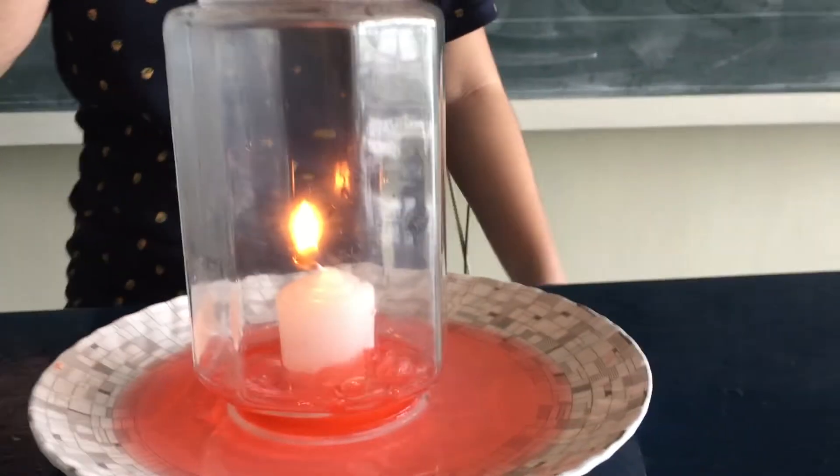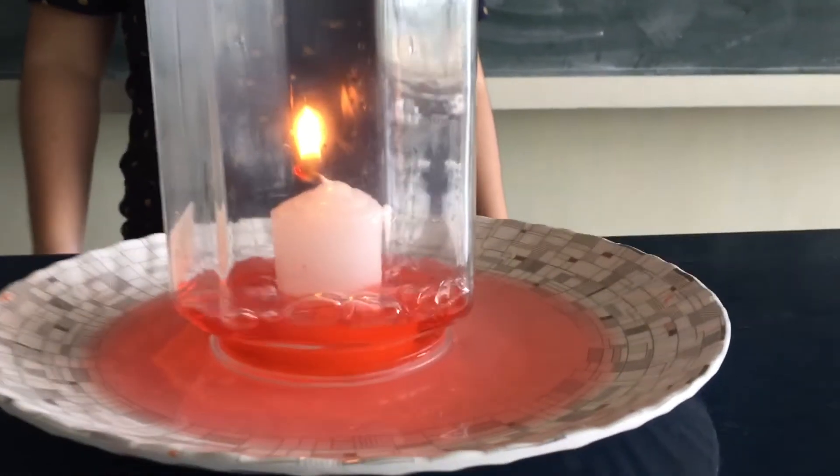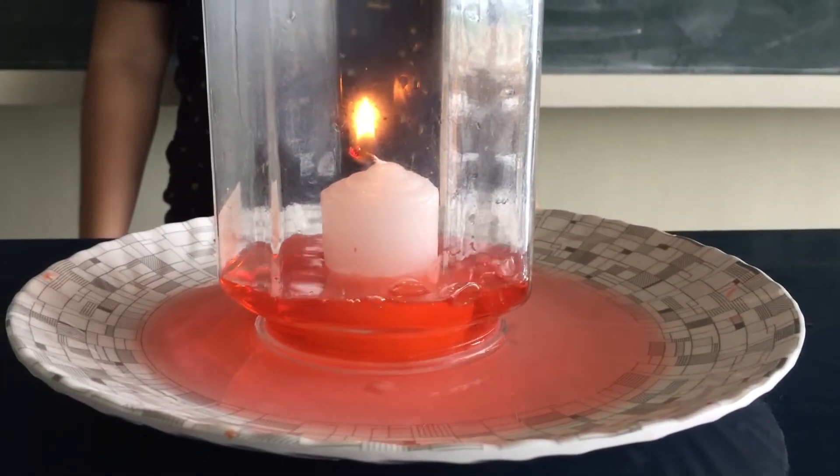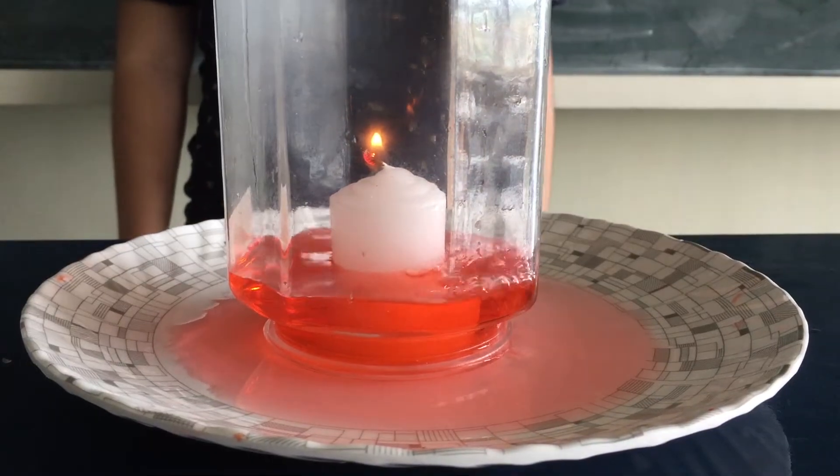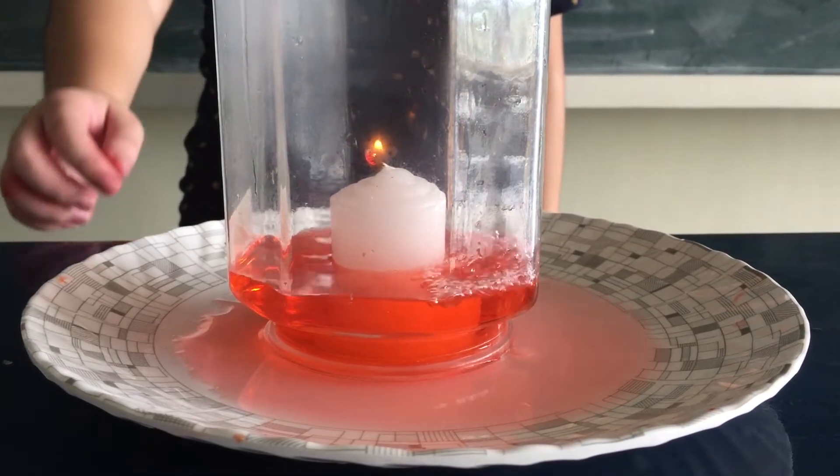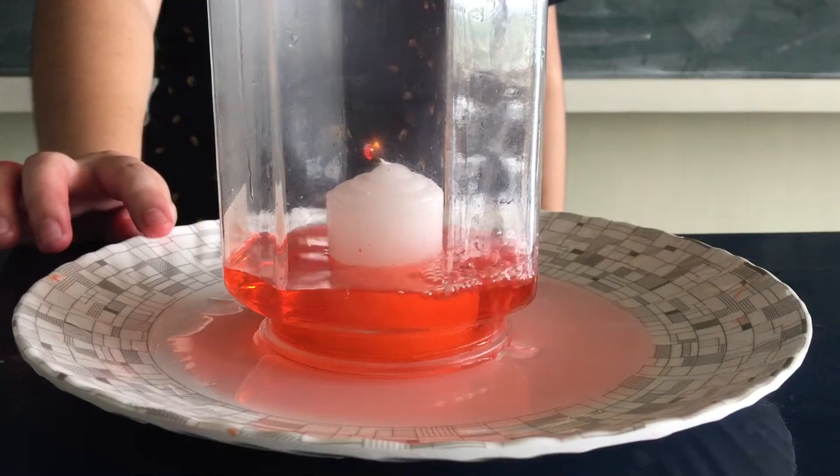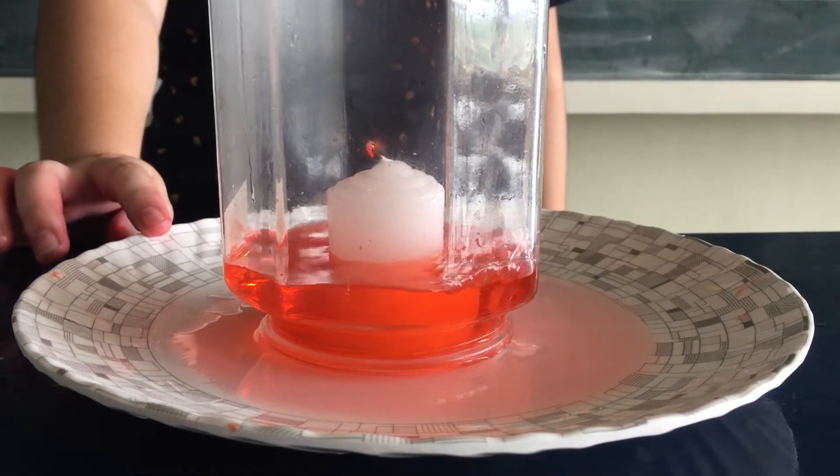After a few minutes with the jar over the candle, you will notice the candle's flame will get smaller and smaller until it is extinguished. Also, you will see that the water level underneath the jar begins to rise after the light from the candle has been fully extinguished.